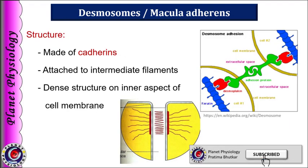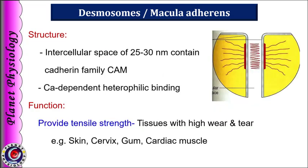Desmosomes are formed by cadherins and cadherin-family anchoring proteins. Anchoring proteins are aggregated on the inner aspect of the cell membrane to form a thickened area inside the cell, which is attached to the intermediate filaments. Extracellular regions of desmosomes show calcium-dependent heterophilic attachments with neighboring cells, and the intracellular space in this region is filled with electron-dense filamentous material. Desmosomes form very strong adhesions and provide tensile strength to the tissue, and hence are found in tissues with high wear and tear rates like skin, cervix, gums, and cardiac muscles.